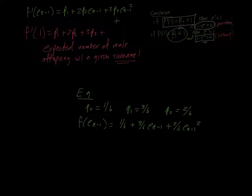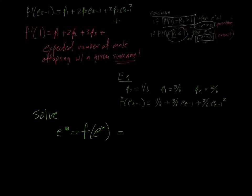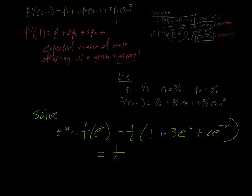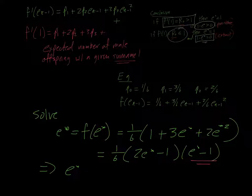If we look at solving the fixed point problem, solve e star is equal to f of e star. Well, f of e star is, we factor out a 1 over 6, you're going to have 1 plus 3 e star plus 2 e star squared. We were told we were going to have to factor polynomials one day, we go ahead and factor this, we're going to end up with 2 e star minus 1 times e star minus 1. There's again that e star equals 1 fixed point, and you end up with e star, the one that's not equal to 1 is equal to 1 half, which means that 1 minus e star is also equal to 1 half.